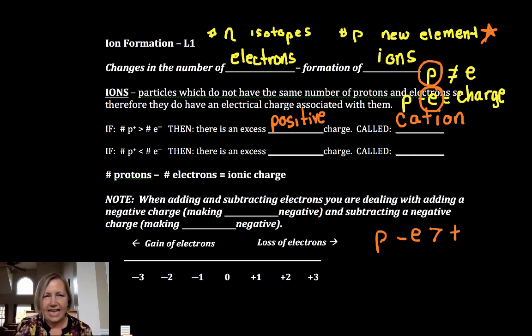Now let's look at the negative ones. If I gain electrons, remember it's all about the electrons. So if electrons are gained, now I have an excess negative. And that's called an anion. So watch as I write it: a negative ion.